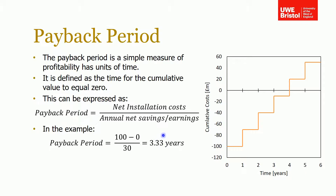That gives us a payback period of three and a third years. After three and a third years, our cumulative value will be zero, and for the remaining time that's pure profit. Schematically, we start at minus 100 million, then each year it steps up by 30 million. The payback period falls between year three and four, where it goes from negative to positive.